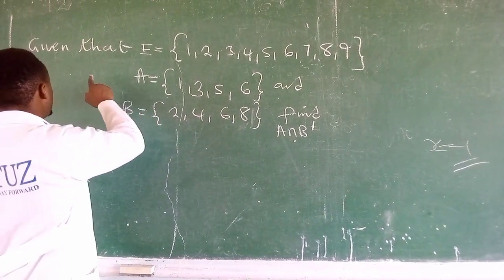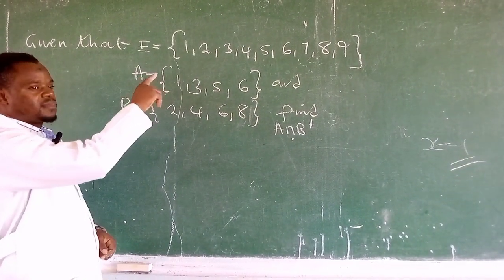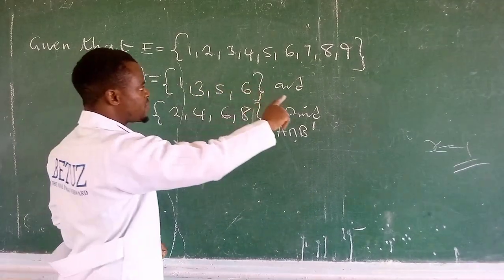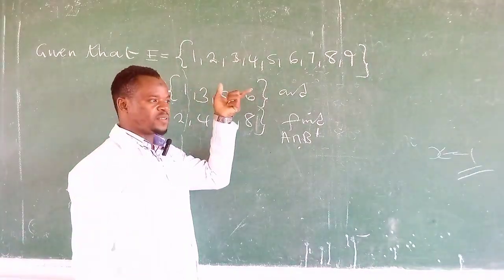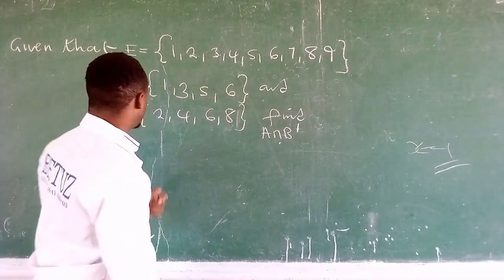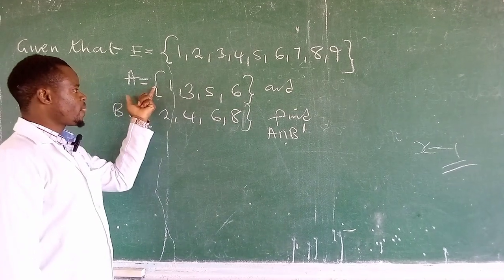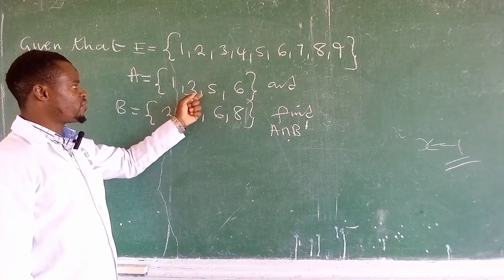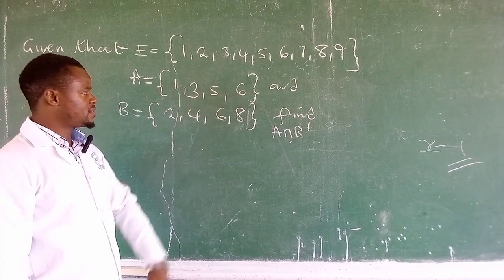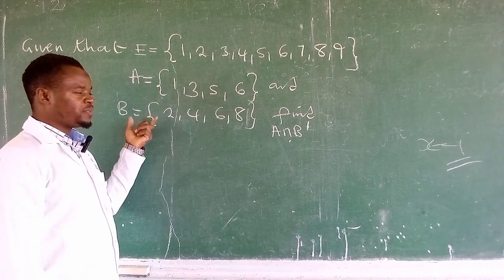The problem is: given that E equals {1, 2, 3, 4, 5, 6, 7, 8, 9}, this is actually a universal set. We are given set A which has the elements {1, 3, 5, 6}, and we also have set B which is {2, 4, 6, 8}.